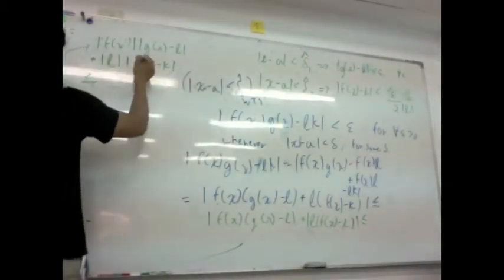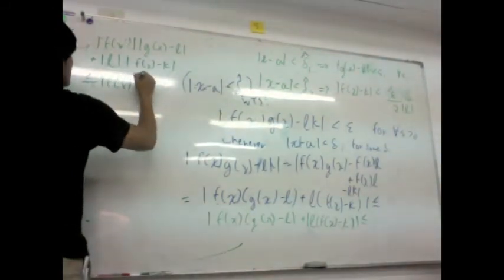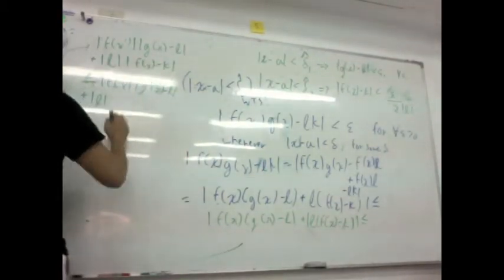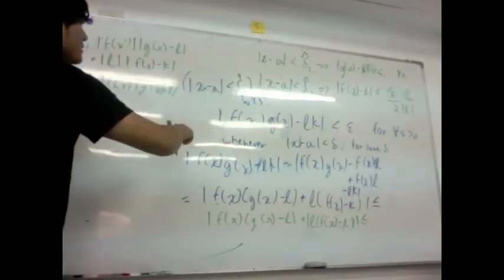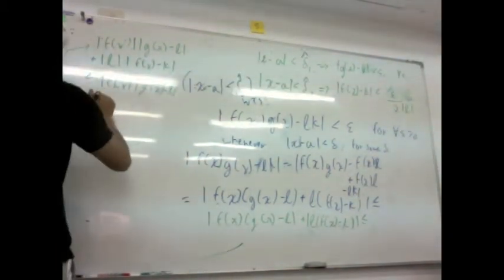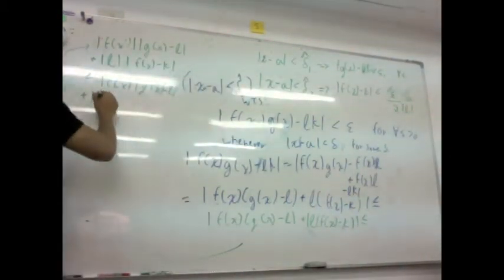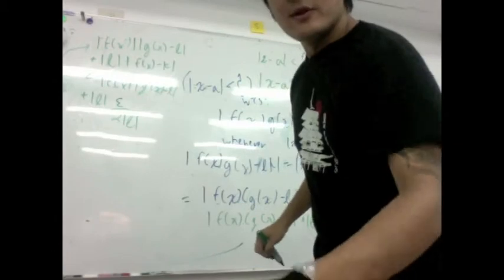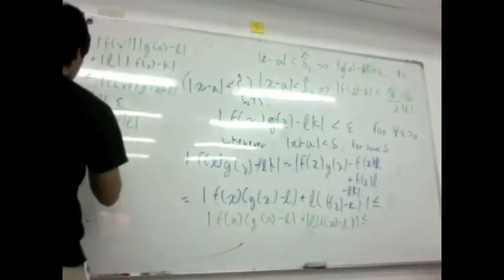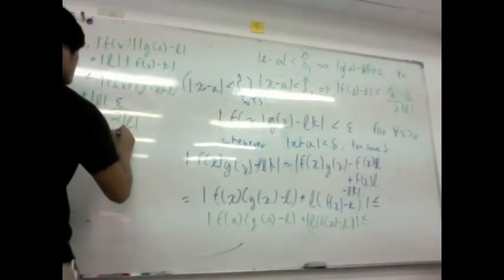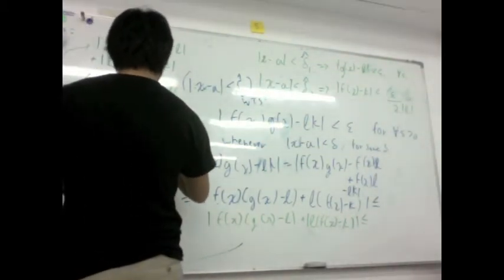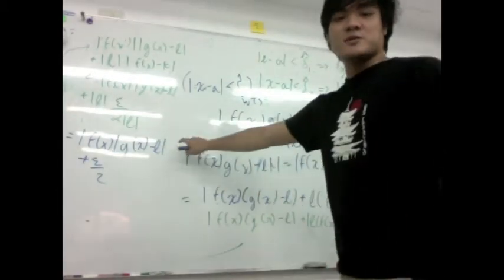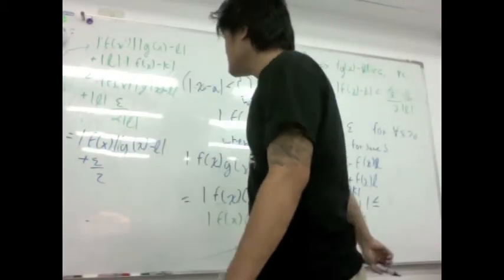And this guarantees this guy's less than or equal to f of x or g of x minus l, plus absolute value of l over, so this guy, we chose this guy to be less than epsilon over 2, plus absolute value of l over epsilon over 2 over absolute value of l. This guy is equal to f of x times absolute value of g of x minus l plus epsilon over 2. So I'm going to turn this guy into epsilon over 2 now. So this is the part you could have been stuck on.